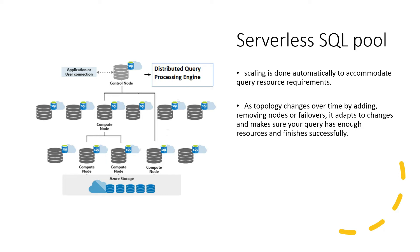The two types of pools are the serverless SQL pool and the dedicated SQL pool. In a serverless SQL pool, scaling is done automatically to accommodate the resource requirements. It will scale automatically if more resources are needed using a scale-out architecture. As the query executes and the topology changes, it just adds and removes nodes. This can happen if resource requirements increase or decrease, or if there is a failover. The serverless SQL pool dynamically adapts to changes, ensuring the query has enough resources without any manual intervention.